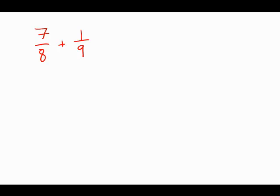The sum seven-eighths plus one-ninth is between, and then there are five answer choices in the forms of ranges.